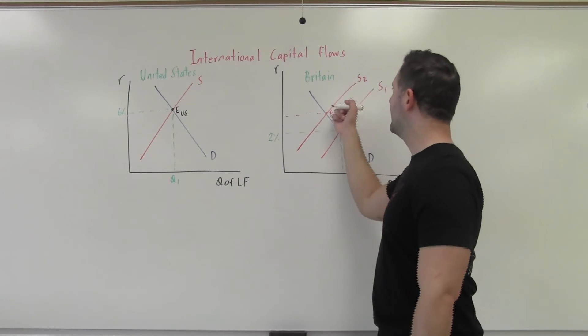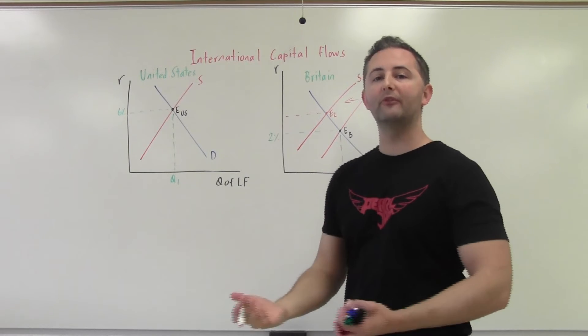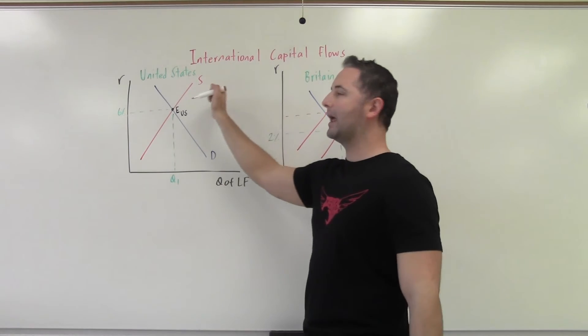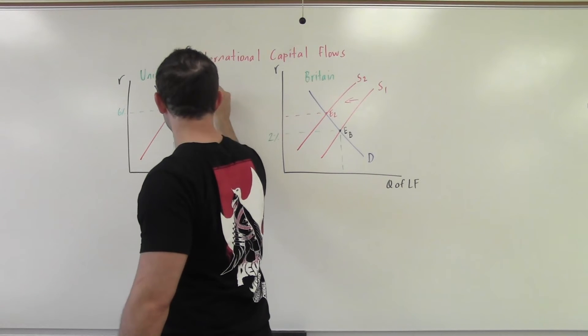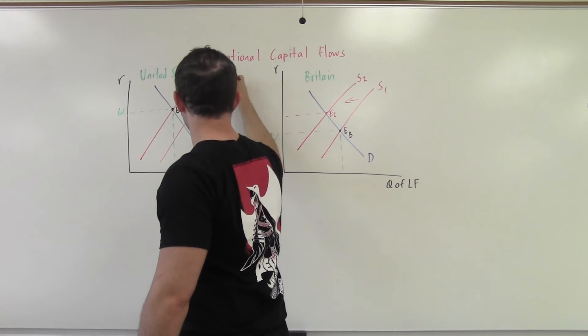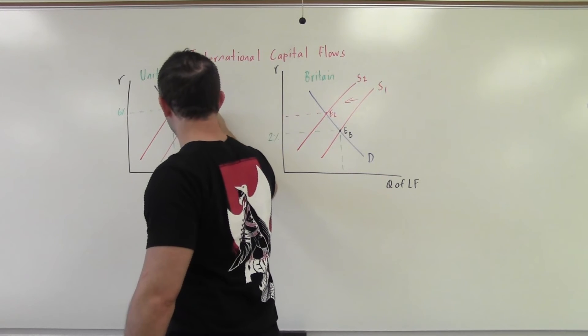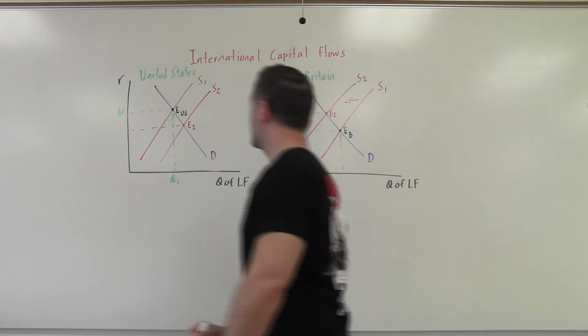We're going to hold off on declaring exactly what interest rate we're at. Now what's going to happen in the US? Well, this is capital outflows for Britain, so whatever is flowing out of Britain must be inflowing somewhere else. That's capital inflow in the United States, so our supply curve is shifting to the right. And again, if everything doesn't match up exactly perfectly, that's okay.